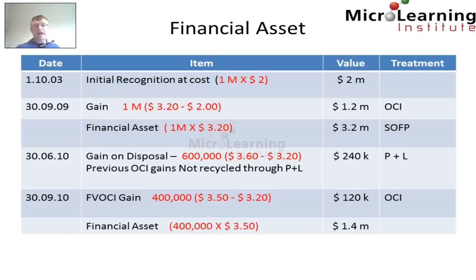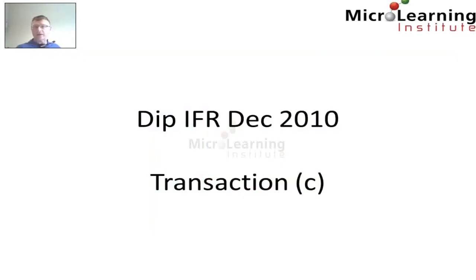Finally, at the 30th of September 2010, on our statement of financial position, we have a financial asset represented by 400,000 shares that remain. At the 30th of September 2010, each of those shares is valued at $3.50, so at the end of the year we have a financial asset of $1.4 million on the statement of financial position. This table summarizes all of the transactions since acquisition for the financial asset in this question. Thank you very much for joining the MicroLearning Institute and for looking at this example of a financial asset from the Diploma in IFR, December 2010.